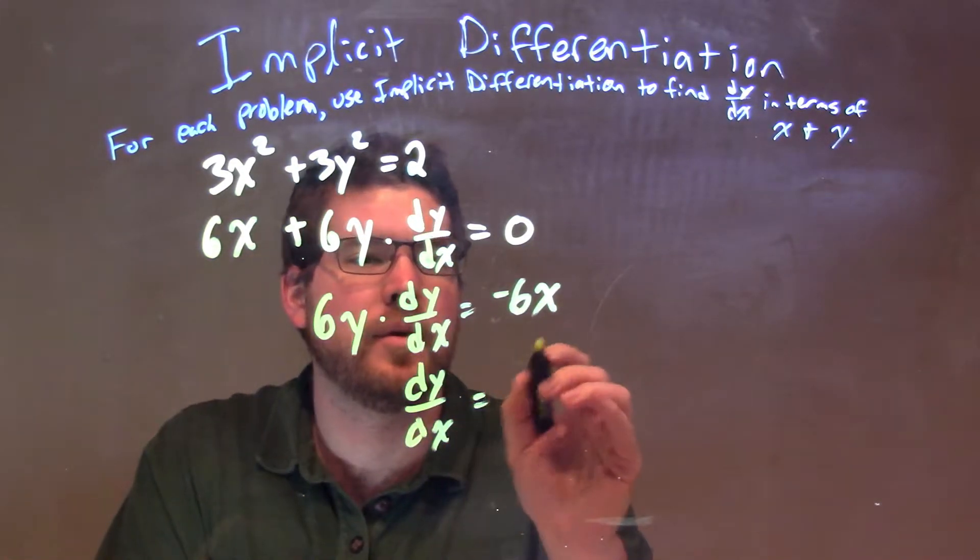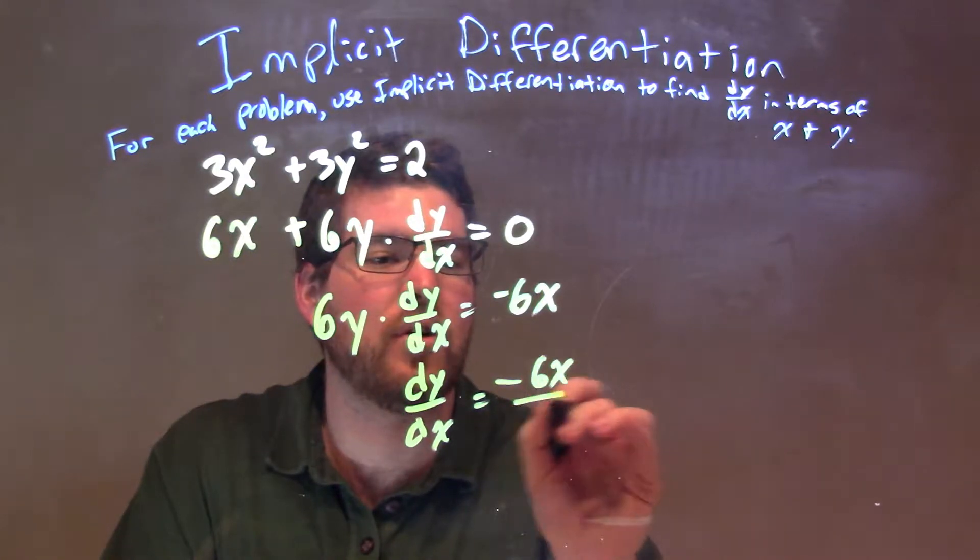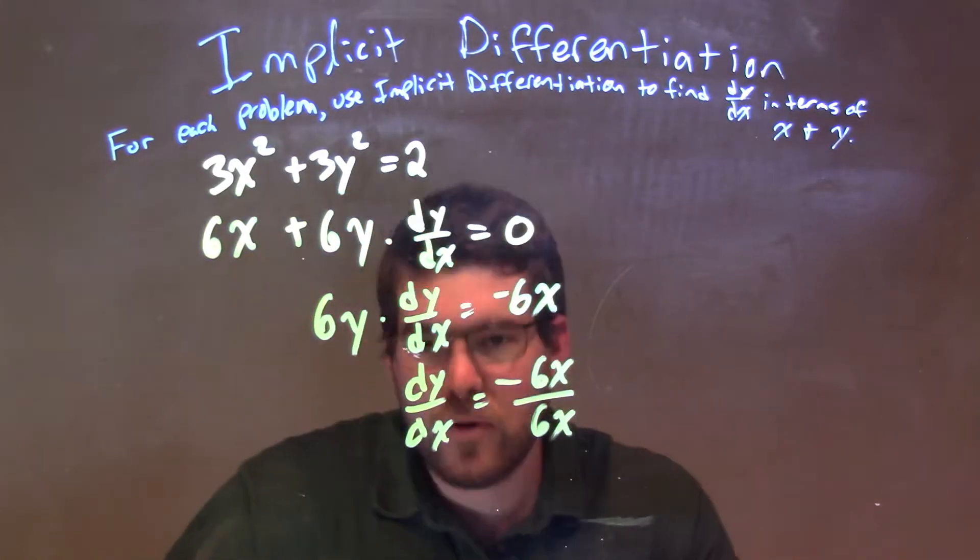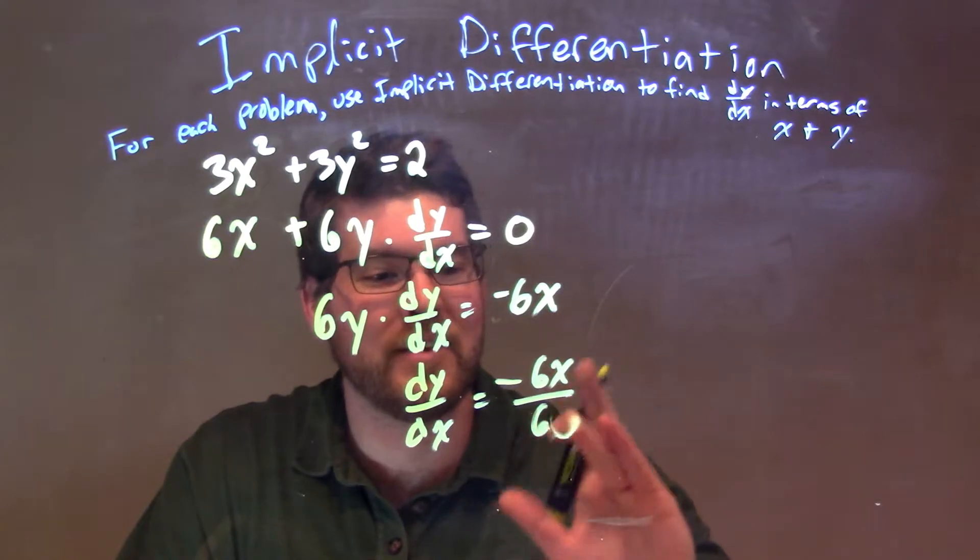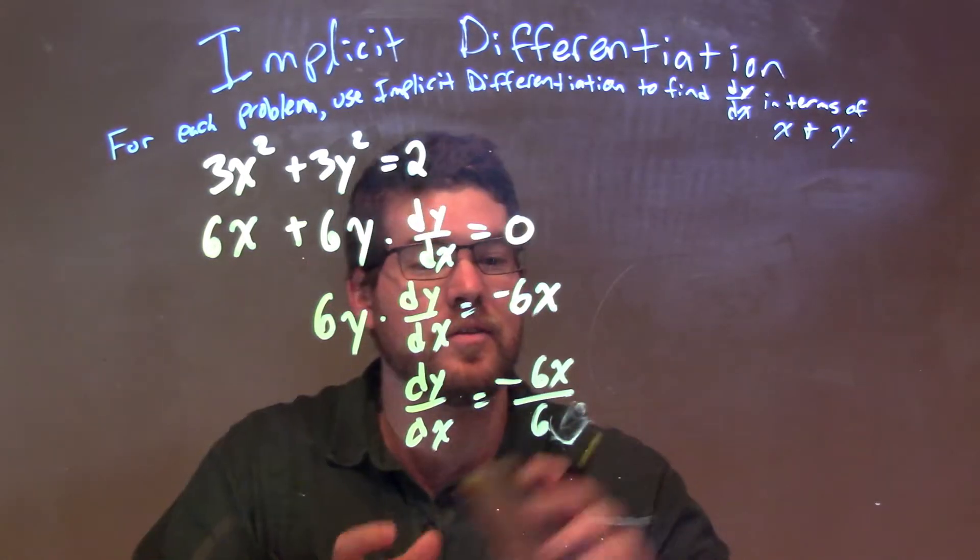dy/dx is equal to, well, negative 6x over 6x. This can simplify - oh, sorry, 6y. Let's see, there's a common mistake you can do right there. 6y.